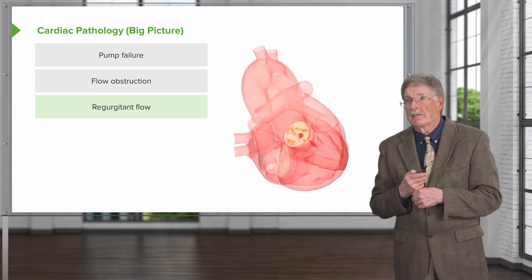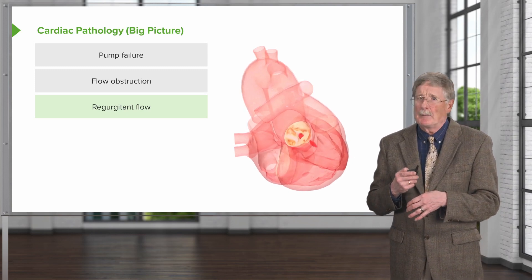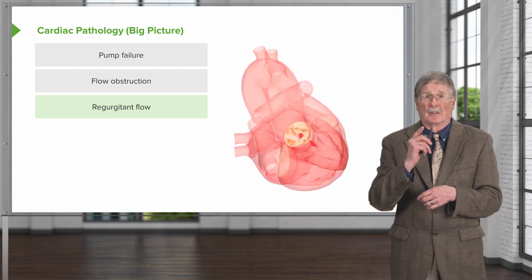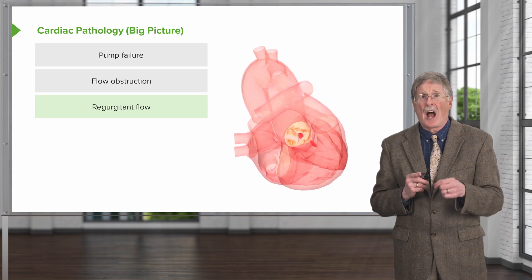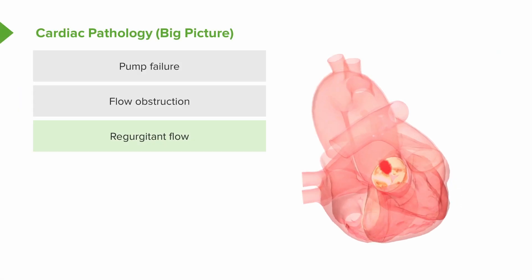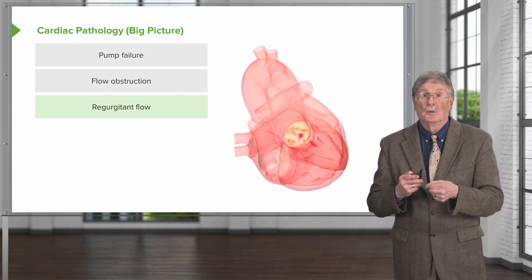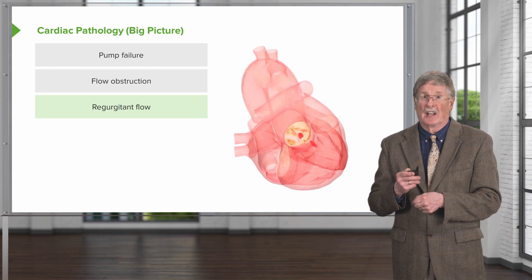If you have stenosis, you can also have regurgitation. The next category is regurgitant flow. This is looking at an aortic valve. Blood should only be going out through the aorta — it should not be going backwards into the left ventricle. That backwards regurgitant flow is going to cause volume and pressure overload in the left ventricle, which eventually will translate back into the left atrium, into the lungs, and we will have heart failure. So regurgitant flow is also a major source of cardiac pathology.